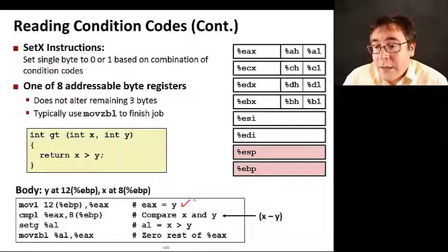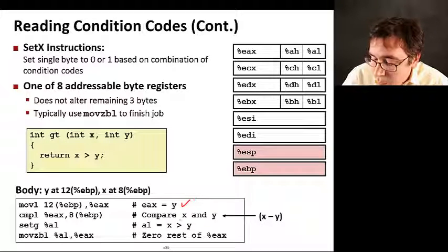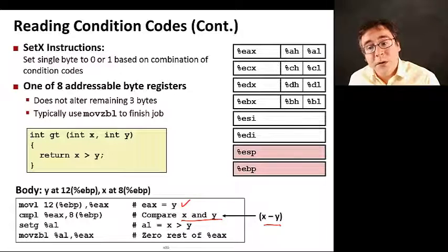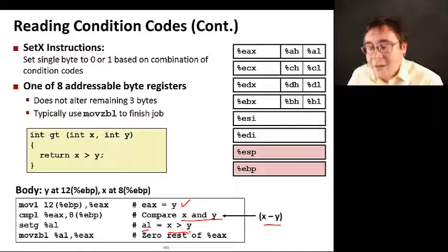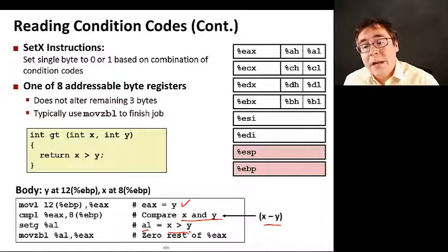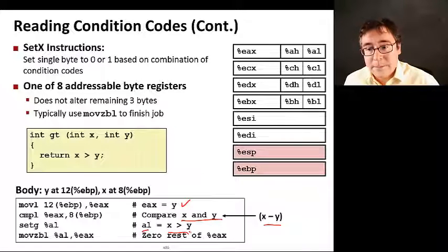Here we are reading y and putting it in EAX, comparing x and y, essentially doing a subtraction and just setting the condition codes. And AL now is going to be set to 1 if x is greater than y and it's going to be set to 0 otherwise.